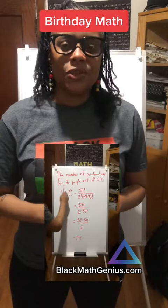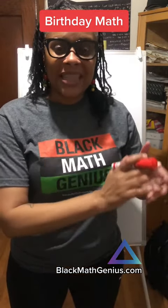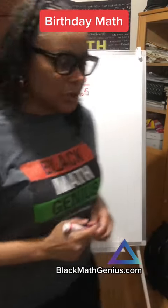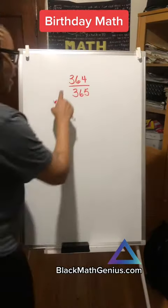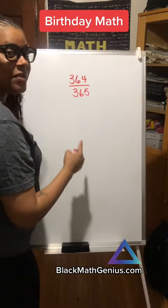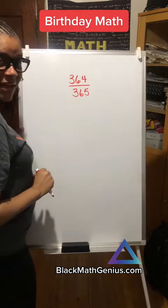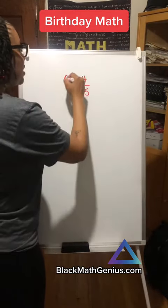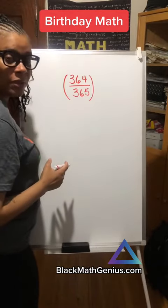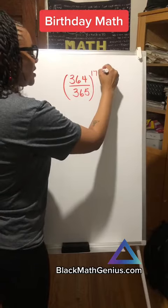Now what we need to do is figure out how many different ways they cannot have the same birthday. So we'll do that here. If you think about just two people, the chances of them not having the same birthday is 364 over 365. Now when we consider 59 people, that's raised to the power of 1,711.